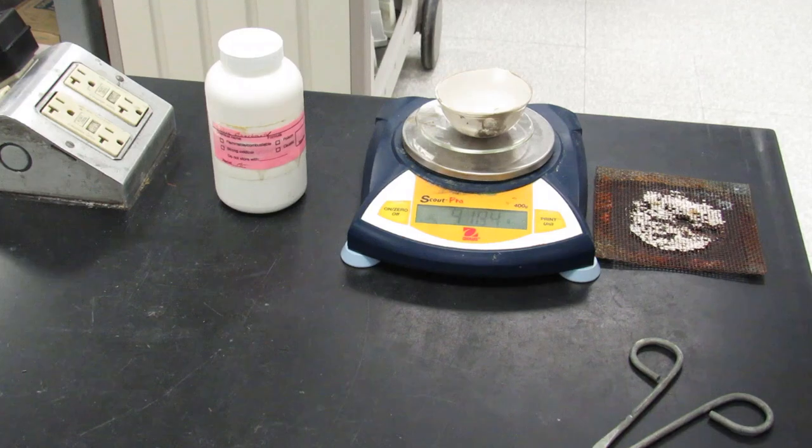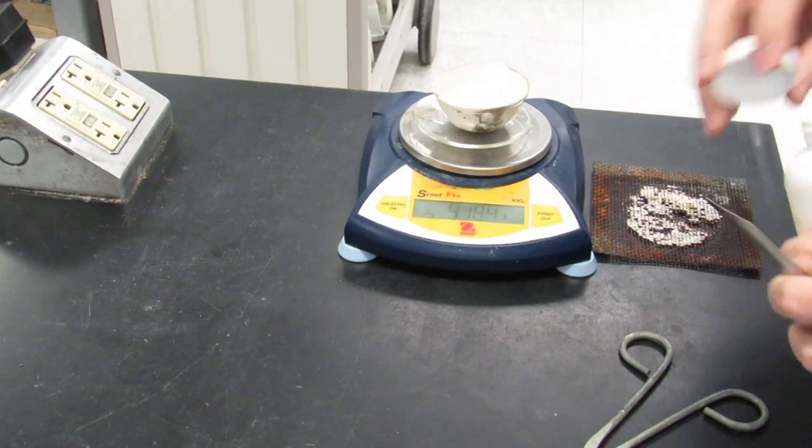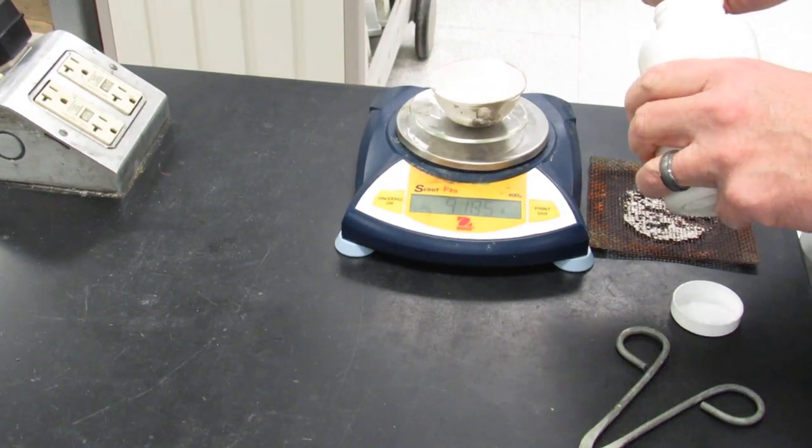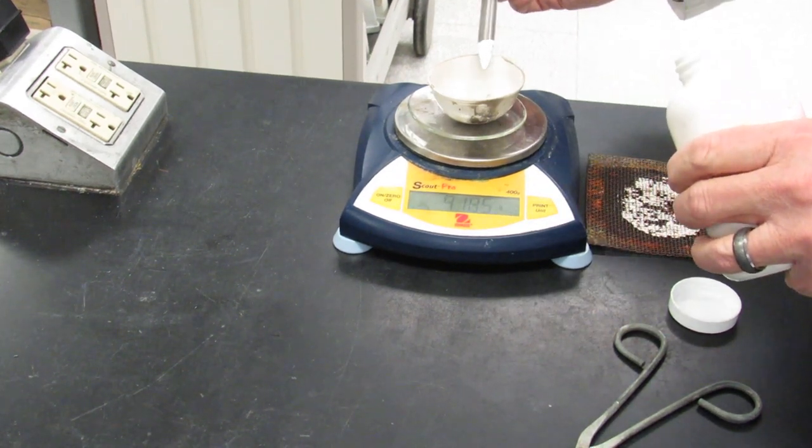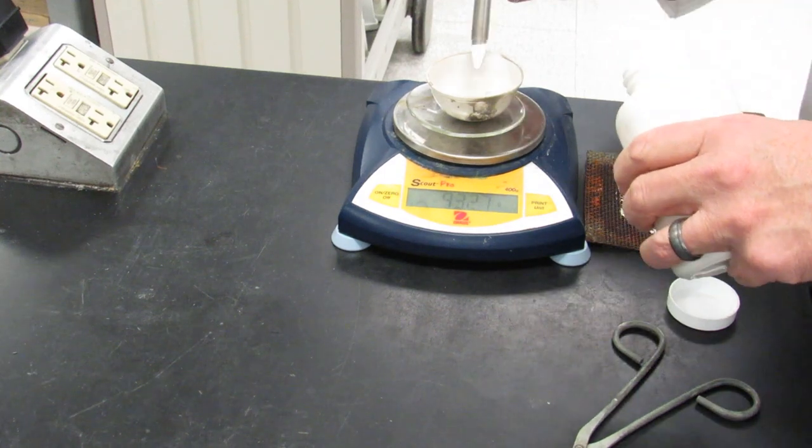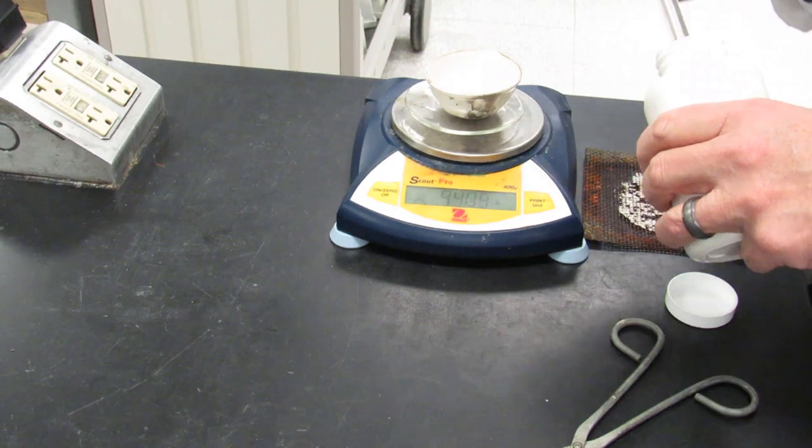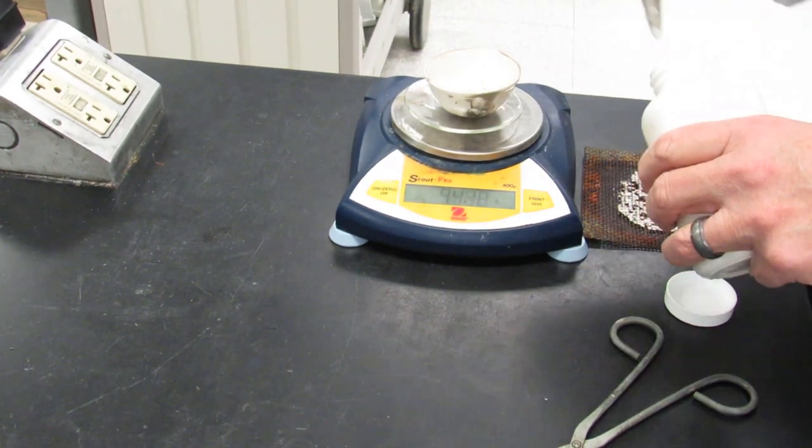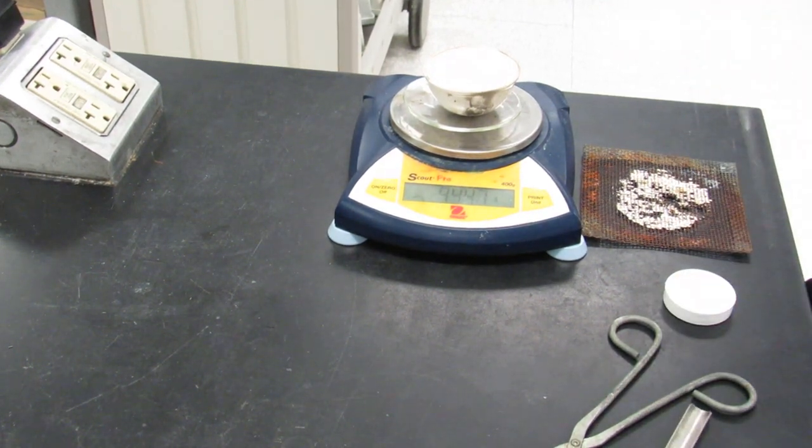And then you're going to add the sodium bicarbonate. You need to add about 2.5 grams. You don't have to be that exact. You get somewhere near 2.5 grams. That looks good.